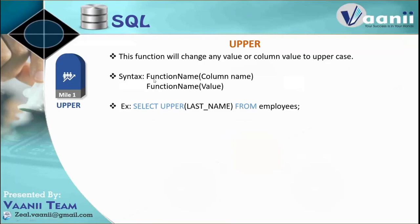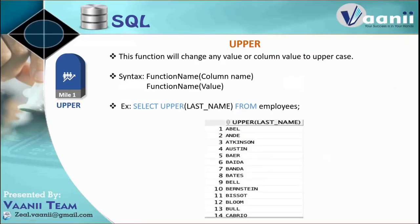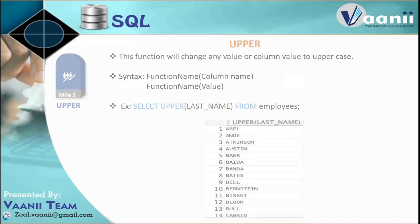The syntax is simple: just write UPPER and then the column name or any value. For example, writing SELECT UPPER(last_name) FROM employees will take the last name — whatever case it is in, lower or mixed — and change it entirely to uppercase. If it is already uppercase, it stays uppercase. So applying UPPER on last_name changes all names to uppercase. Let's walk through the syntax and then go to the database and fire some queries.